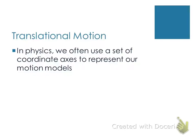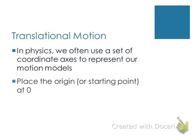In physics, we use coordinate systems or coordinate axes to represent our motion models. For a motion problem, we're going to place the origin of that coordinate system at wherever our motion is starting. I will always put zero-zero, my starting point, where the motion is starting. Some people like to put the origin at the ground, but I always put it where the motion starts.